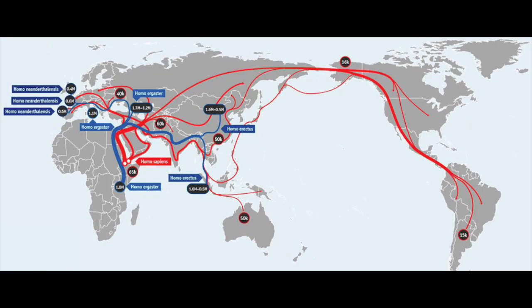From there, there were branchings out in many different directions — into Europe, into the rest of Asia, Eurasia, to the north, and then down to Australia and Japan, and ultimately to the Americas on the other side.